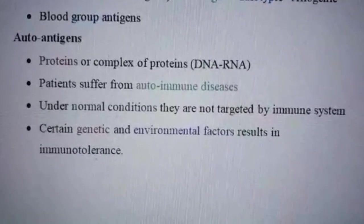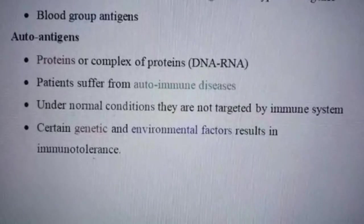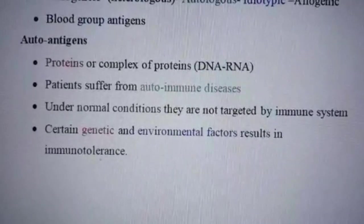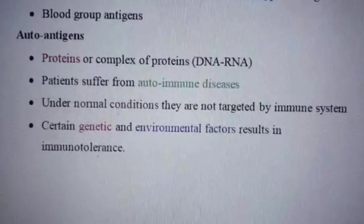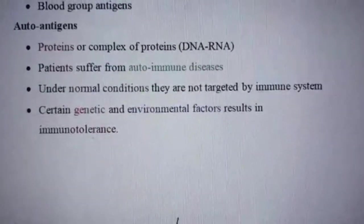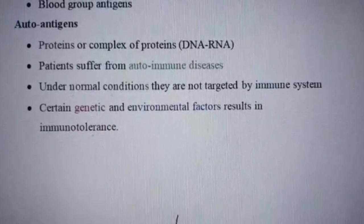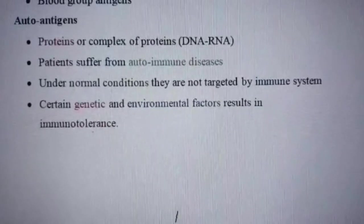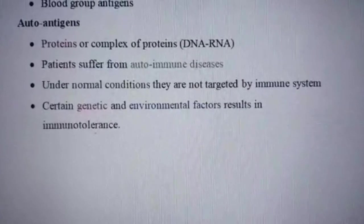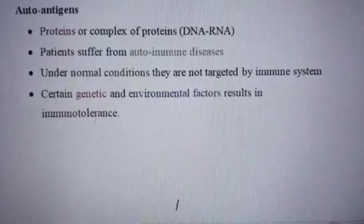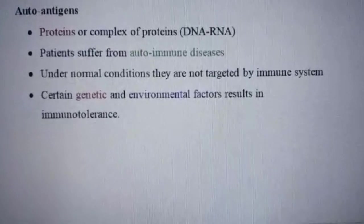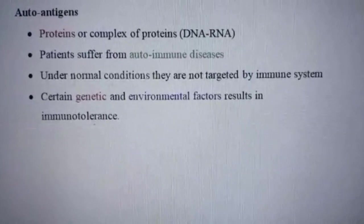The third type is auto antigens. They are proteins or complexes of proteins like DNA or RNA. When a patient suffers from autoimmune diseases, these types of antigens are usually observed. Under normal conditions they are not targeted by the immune system — the immune system recognizes them as normal antigens of the body — but under certain genetic and environmental factors, they result in immunotolerance and are recognized.